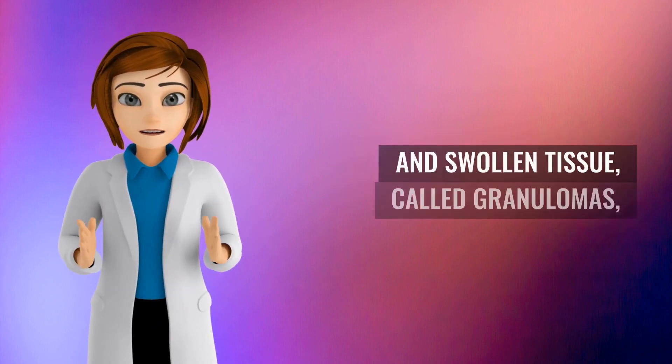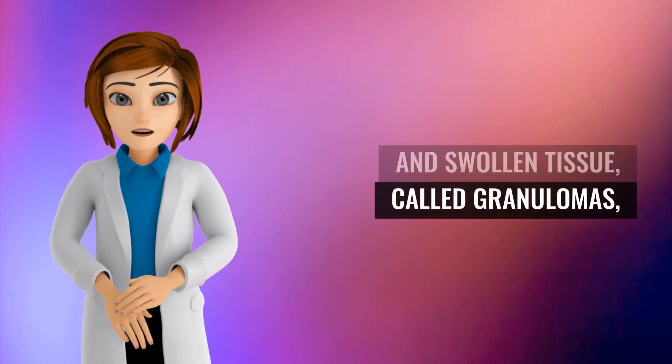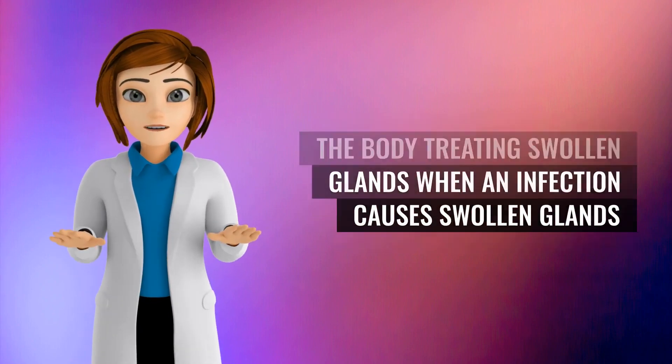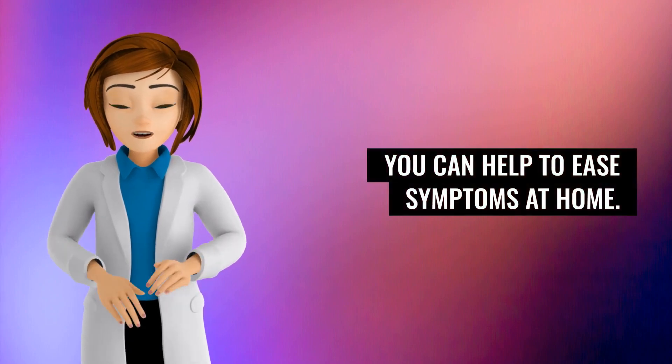Rheumatoid arthritis, where the immune system starts to attack the tissue lining the joints, or sarcoidosis, where small patches of red and swollen tissue, called granulomas, develop in the organs of the body. Treating swollen glands. When an infection causes swollen glands, you can help to ease symptoms at home.